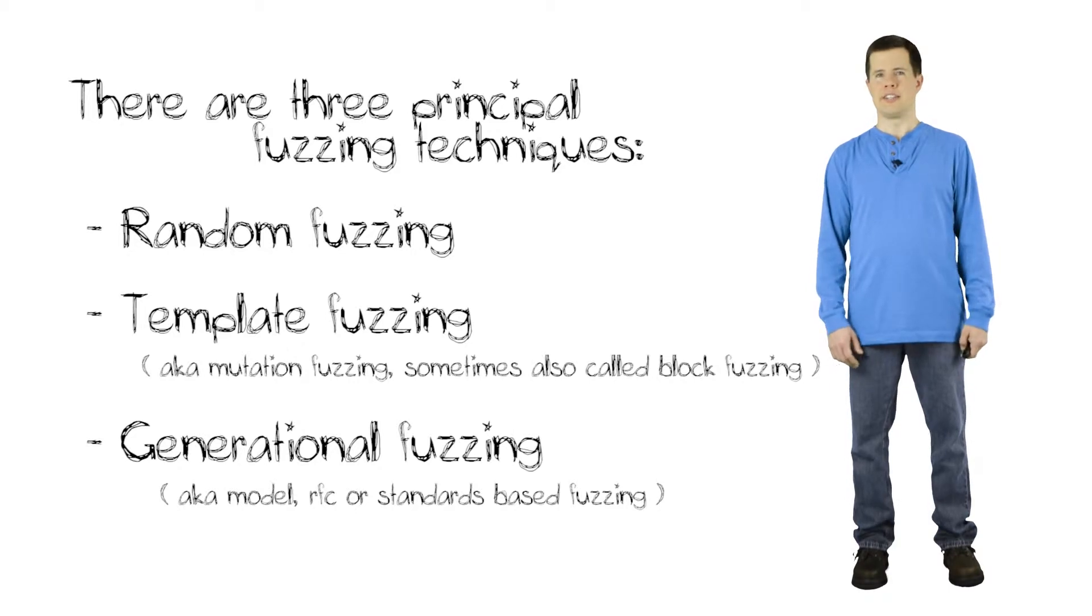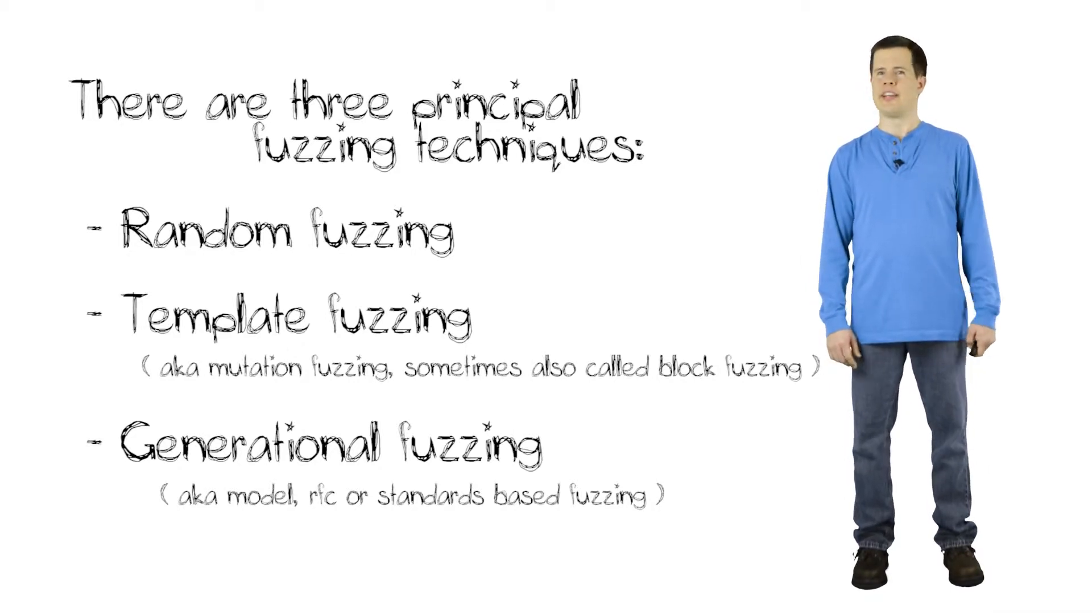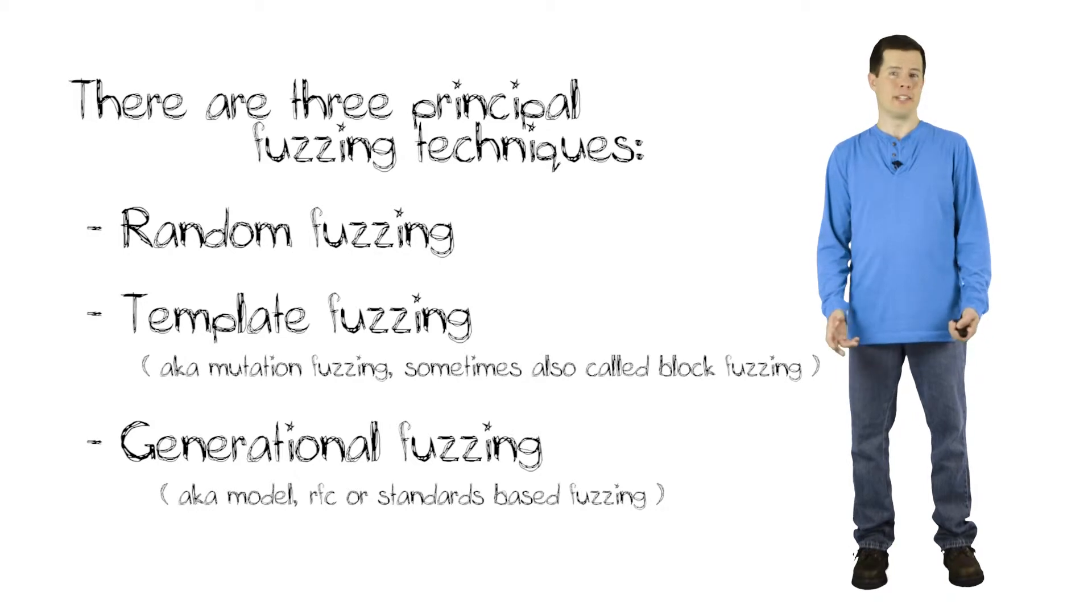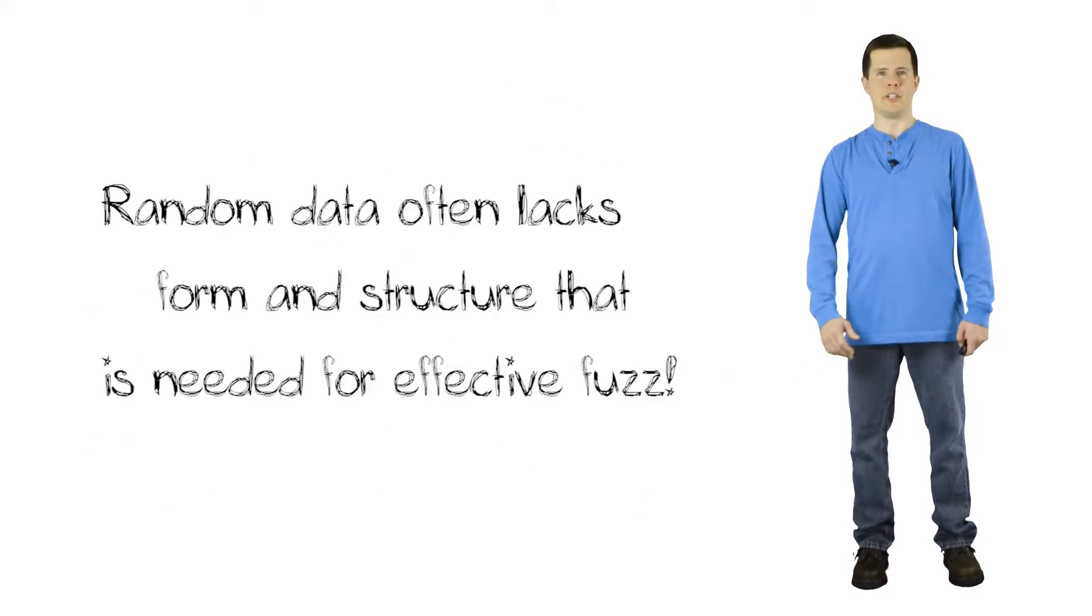The first technique, the easiest technique, is random fuzzing. And you can actually write a random fuzzer yourself in five or six lines of Python or Ruby or whatever you want. But it's not going to do much for you.